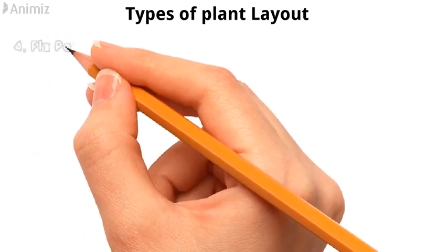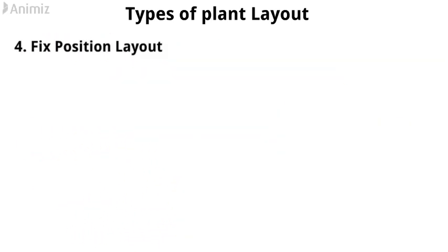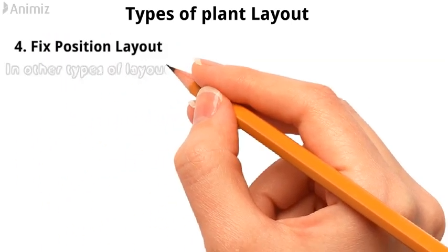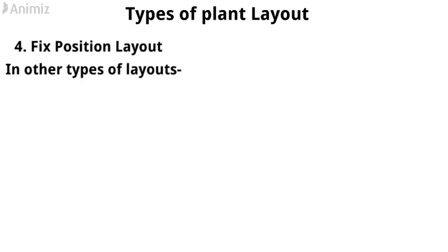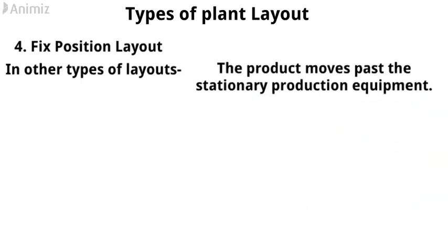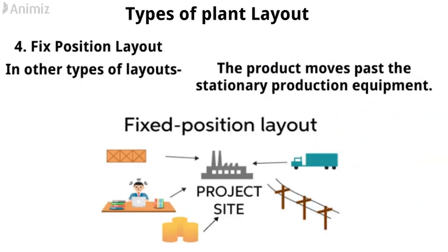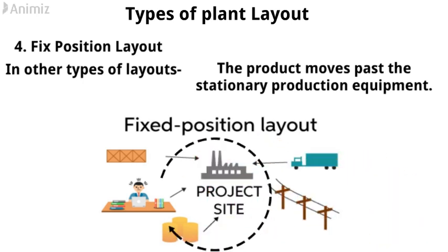Fixed position layout: In other types of layouts, the product moves past the stationary production equipment. But in a fixed position layout, the product is kept stationary and equipment moves around it.